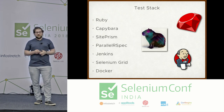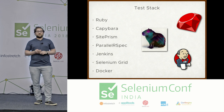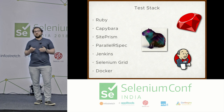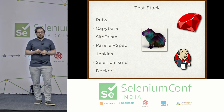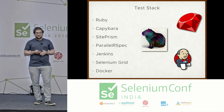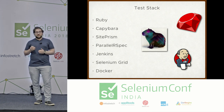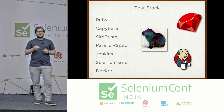Our testing stack: we use Ruby, Capybara — a DSL for using Selenium in Ruby with natural language methods you can read in English — Site Prism for our page object model, Parallel RSpec for parallel test execution, and Jenkins as our CI server. We run our tests on a Selenium grid, 10 at the same time. We also use Docker — all our microservices are Dockerized, and the tests themselves are also Dockerized.